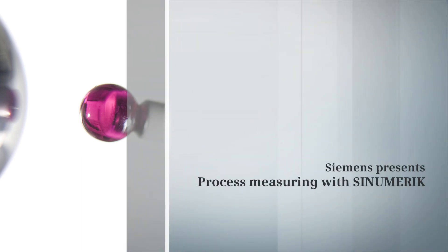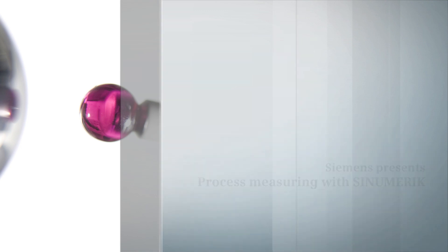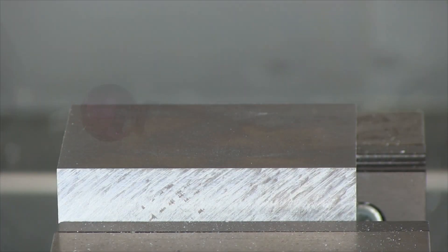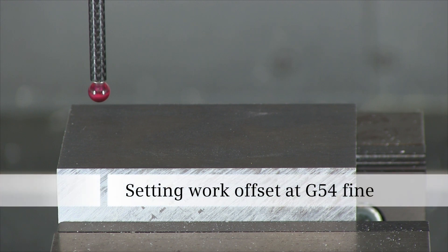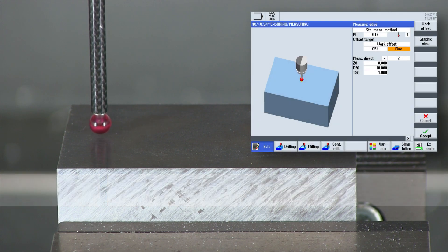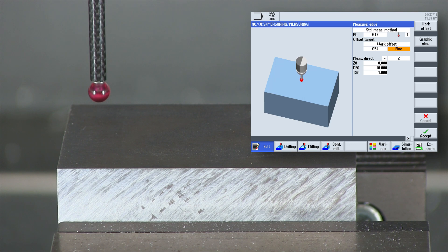Process measuring with CNumeric. With the measurement cycles in automatic, measurement procedures can be automatically performed within the program. For example, determination of the zero offset.